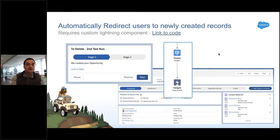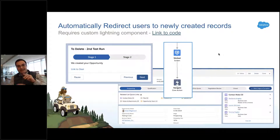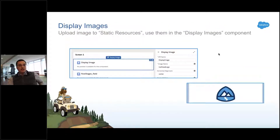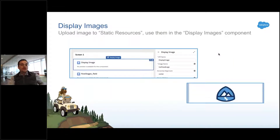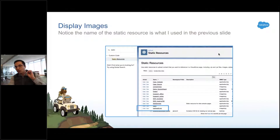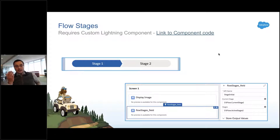Instead of just showing a link to the new opportunity like last time, there's an action you can create that redirects the screen entirely — when the user hits Next, they're taken straight to the new record. I'll also show you how to display images in your flow by uploading to static resources and referencing the name, and how to add flow stages so users can see where they are in the process.